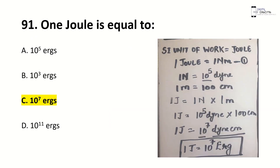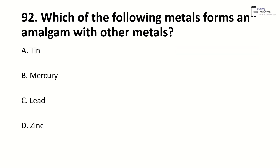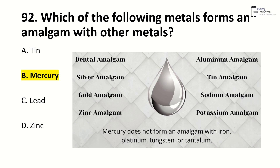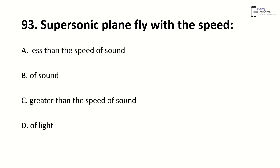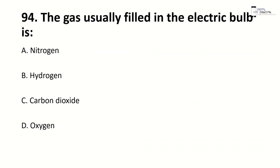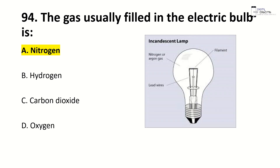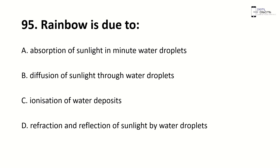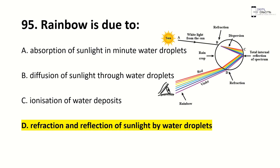One joule is equal to — right answer is C, 10⁷ ergs. Which of the following metals forms an amalgam with other metals? Right answer is D, mercury. Supersonic planes fly with the speed greater than the speed of sound. The gas usually filled in an electric bulb is — right answer is nitrogen. Rainbow is due to — right answer is D, reflection and refraction of sunlight with water droplets.